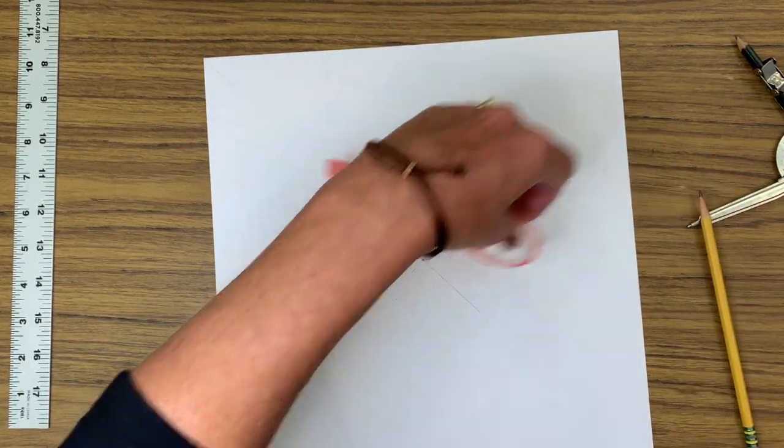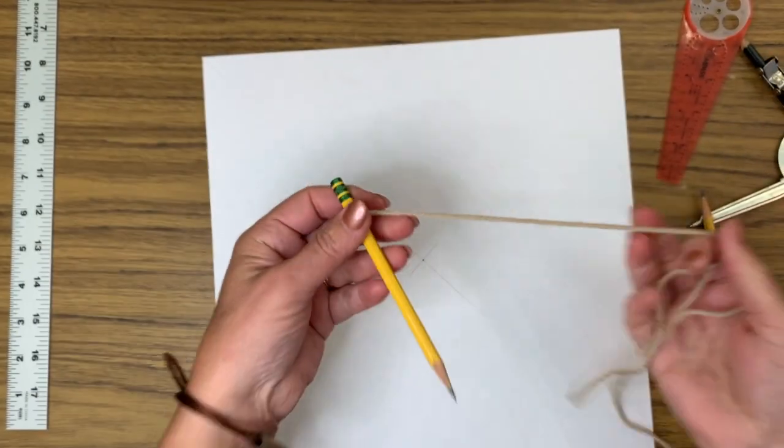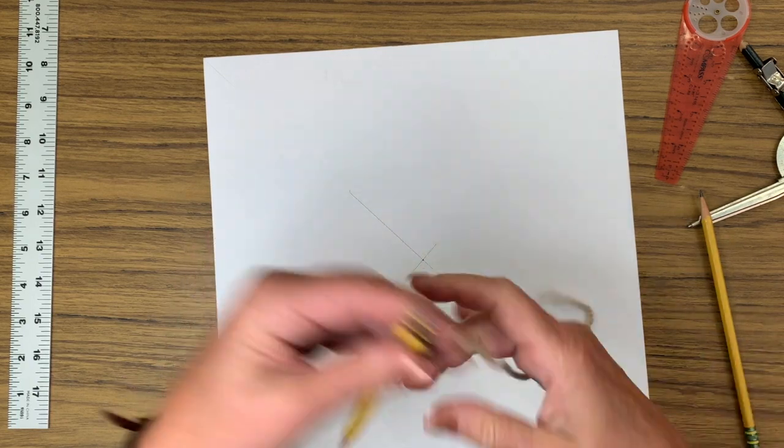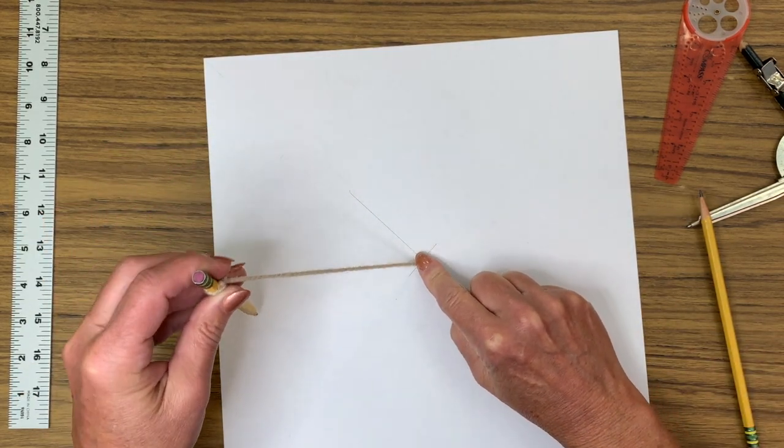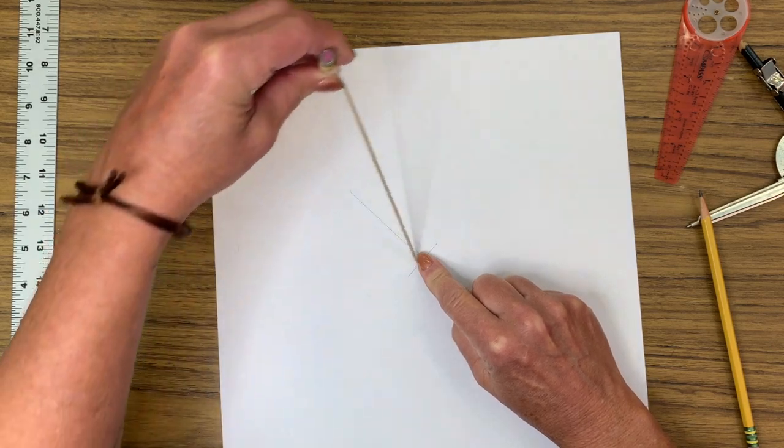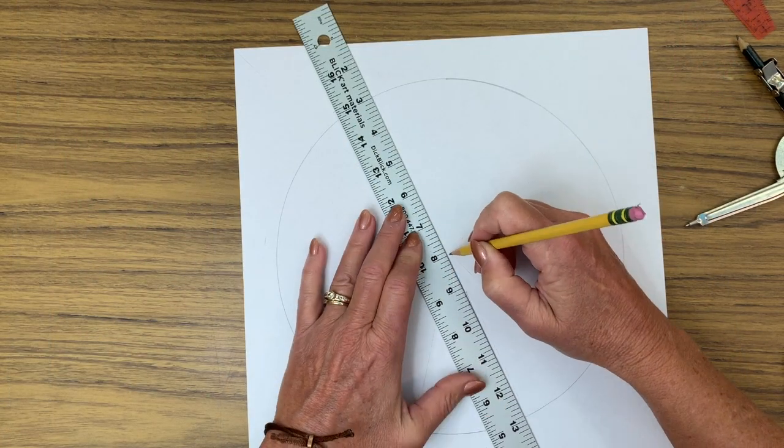We might not have a compass at home. If you have a piece of string, a shoelace, that simply will make a compass. Take the string, put it on the center, tie it to a pencil, and then create your arc.